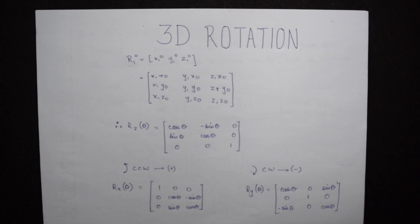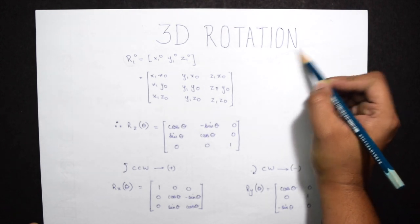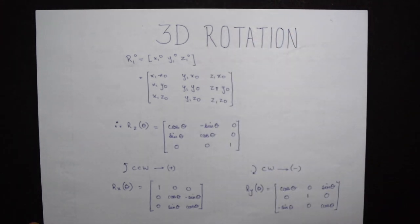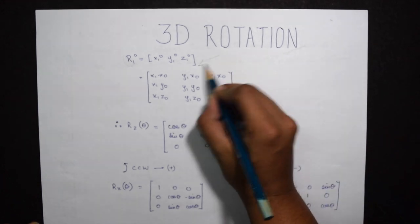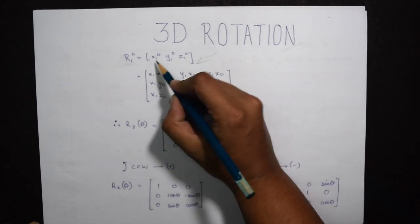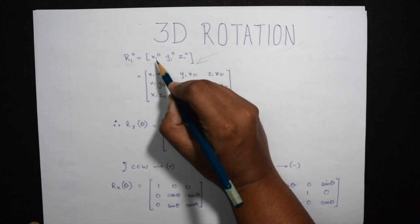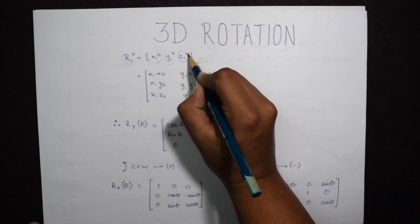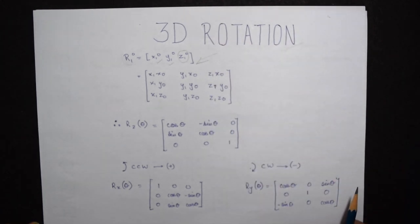Hello guys, Robomatrix is back with what was promised: a video on 3D rotation. Let's look into it. As we saw earlier, the rotation of the first matrix with respect to the 0th frame will be x1,0, y1,0, and here we are including a z frame, that is z1,0 with respect to the z0 frame.